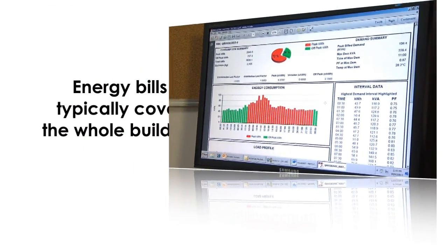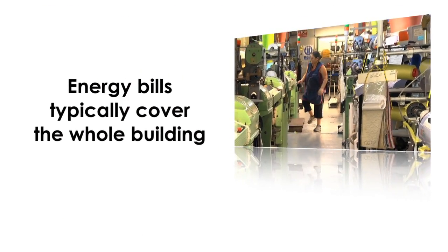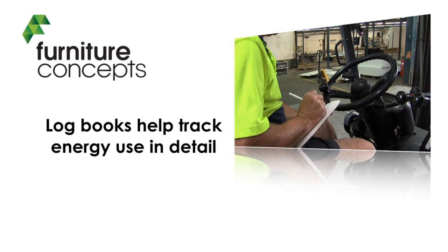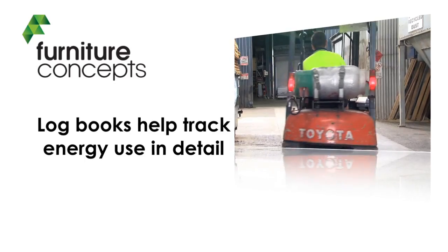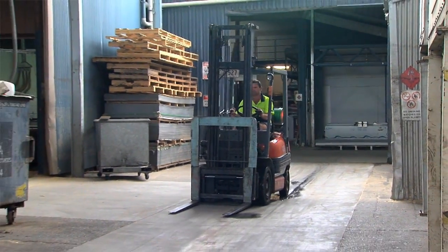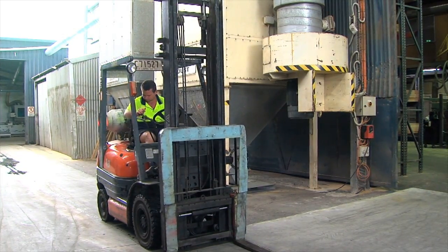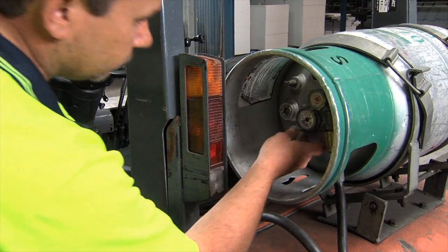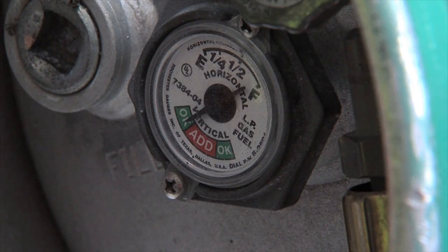Energy bills are a good source of data, but typically they cover a whole building or site. Furniture Concepts set up log books so they could track their energy use in more detail. They had an old forklift that was leaking gas. Because all the gas used to be under one account, nobody noticed anything — they just knew they were using lots of gas but couldn't pinpoint the source. Once they worked out which forklift was using how much gas, they realised that one forklift was driving roughly the same amount of time as another but using double the gas consumption. There must be something wrong.